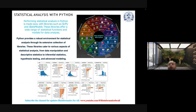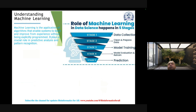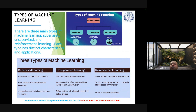Machine learning is the application of algorithms that enable systems to learn and improve from experience without being explicitly programmed. It plays a crucial role in predictive analysis and pattern recognition. There are stages — data collection, cleaning and preparing data, model training, and prediction — but mainly three key steps: data collection, model training, and prediction.